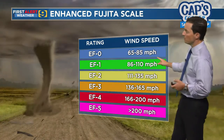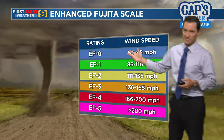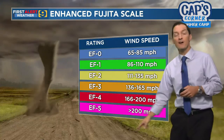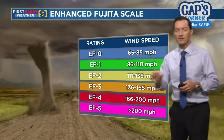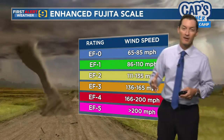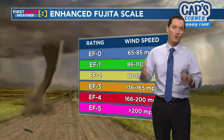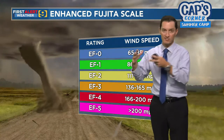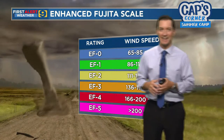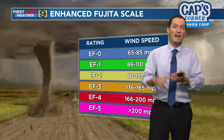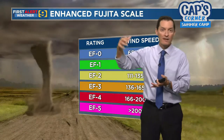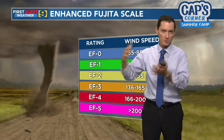An EF0 tornado can have winds as low as 65 miles per hour up to 85 miles per hour. But when you start talking about an EF5 tornado, those are winds greater than 200 miles per hour. EF5 tornadoes are stronger than most of our strongest hurricanes.